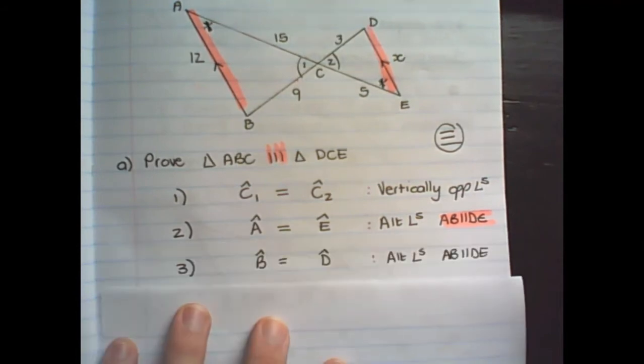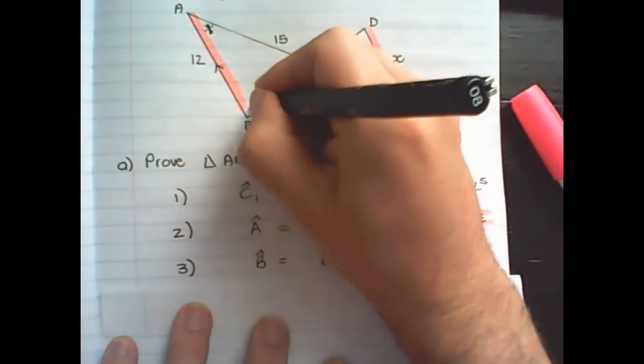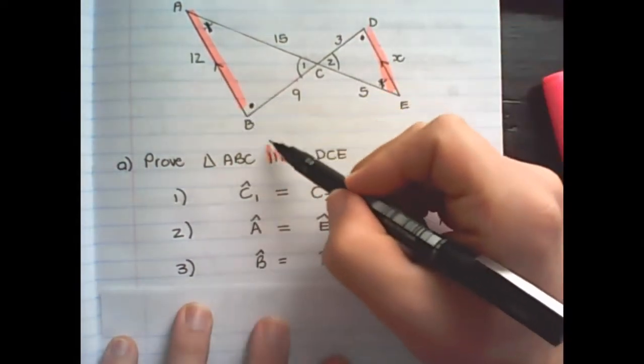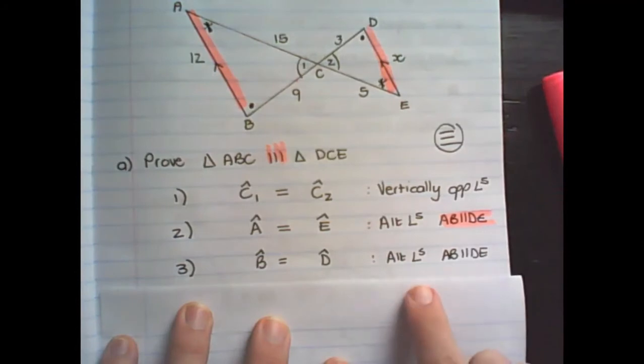And thirdly we have angle B equal to angle D. And they are also alternate angles because the line AB is parallel to the line DE.